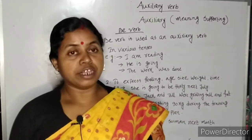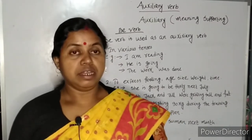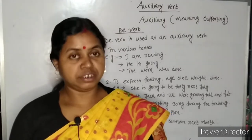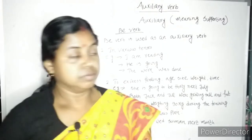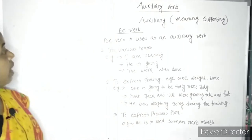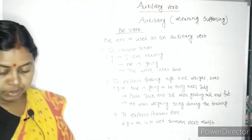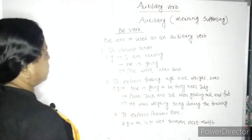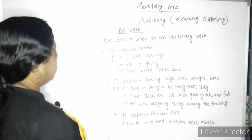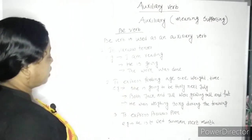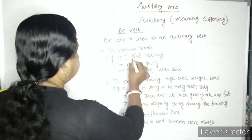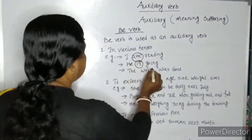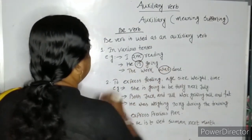Be verb also expresses feeling, age, size, weight, time, etc. Be verb is used as an auxiliary verb in various tenses. For example: I am reading, he is going, the work was done. Here, 'am' is be verb, 'is' is be verb, 'was' is also be verb.